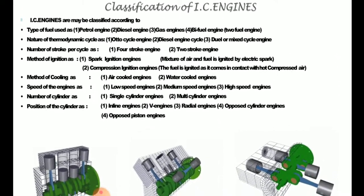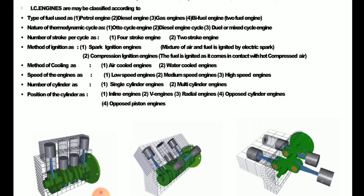The classification of IC engines is based on different parameters. First, based on type of fuel used: petrol engine, diesel engine, gas engine, biofuel engine, and dual-fuel engines. Second, based on the nature of the thermodynamic cycle: Otto cycle, diesel cycle, or dual cycle (a combination of Otto and diesel). Third, based on the number of strokes: four-stroke engine or two-stroke engine.